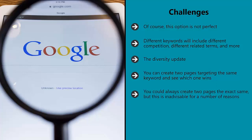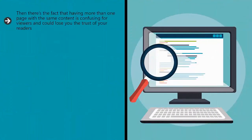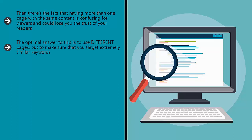You could always create two pages the exact same, but this is inadvisable for a number of reasons. Firstly, Google will see a precise duplicate page as being worthless and might even penalize the page. Google doesn't want its users to repeatedly stumble upon the same content, and so it won't rank it. If these pages are hosted on separate domains, which introduces more complex factors such as domain age, then Google might see one page as having violated the copyright of the other and the entire site could be severely penalized. Then there's the fact that having more than one page with the same content is confusing for viewers and could lose you the trust of your readers. The optimal answer is to use different pages but to make sure that you target extremely similar keywords.